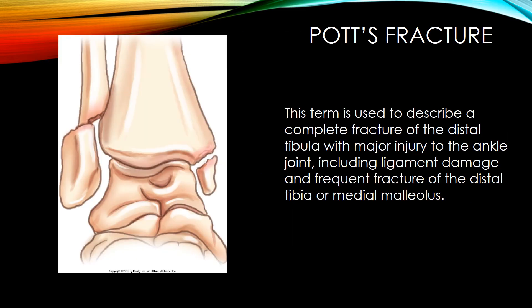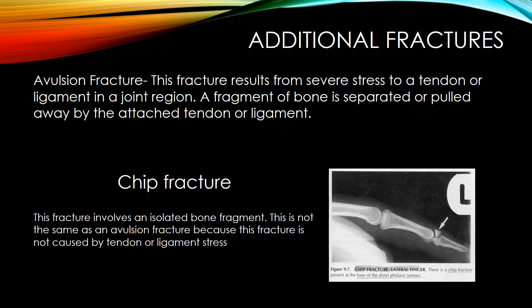Pott's fracture is used to describe a complete fracture of the distal fibula with major injury to the ankle joint, including ligament damage and frequent fracture of the distal tibia or malleolus. An avulsion fracture results from severe stress to a tendon or ligament in a joint, where a fragment of bone is separated or pulled away by the attached tendon or ligament. A chip fracture involves an isolated bone fragment and is not the same as an avulsion fracture, because it is not caused by tendon or ligament stress.